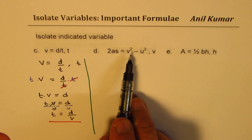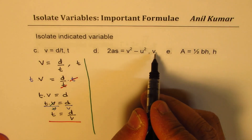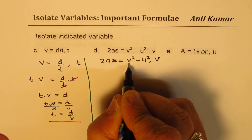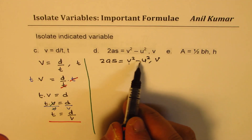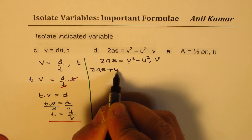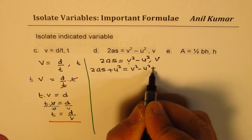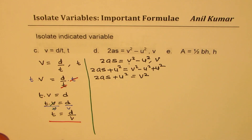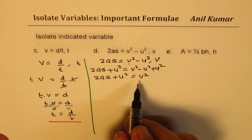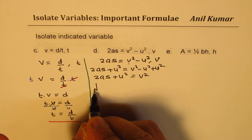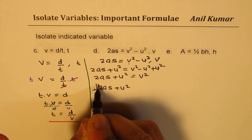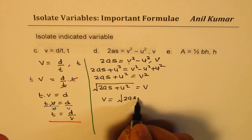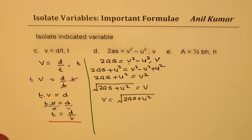Now, 2as equals to v squared minus u squared, and we need to isolate velocity v. First step: add u squared to both sides. So we get 2as plus u squared equals to v squared, since minus u squared plus u squared is 0. To find v, we square root both sides and get v equals to square root of 2as plus u squared.